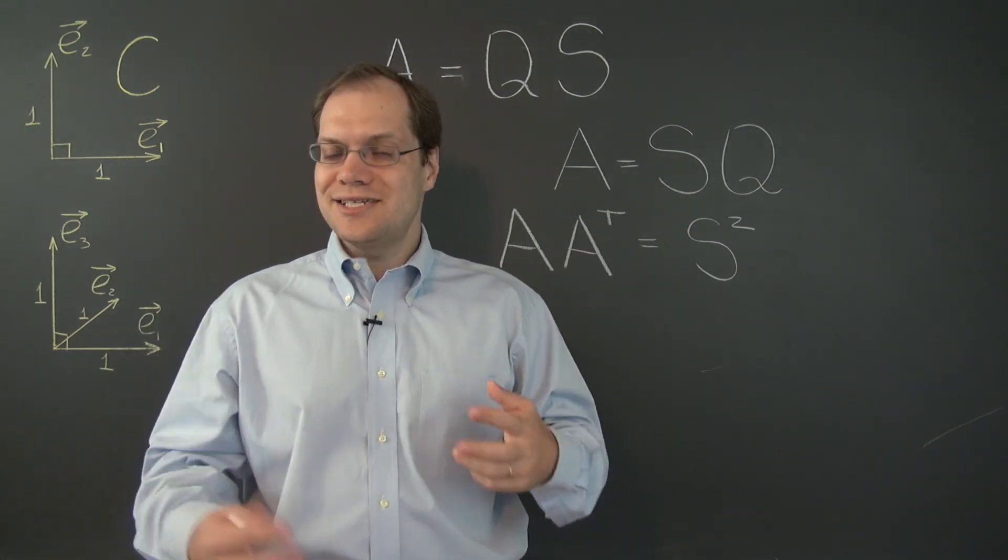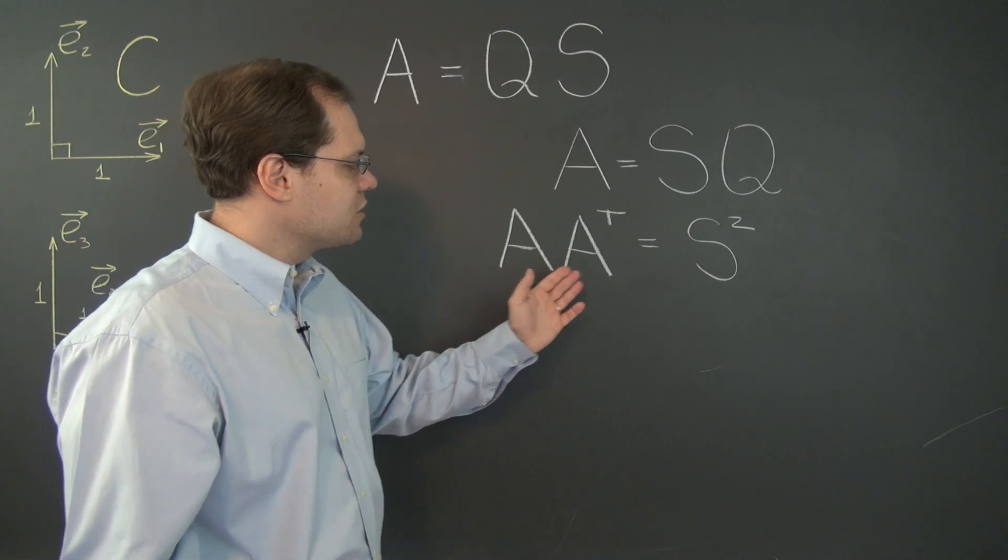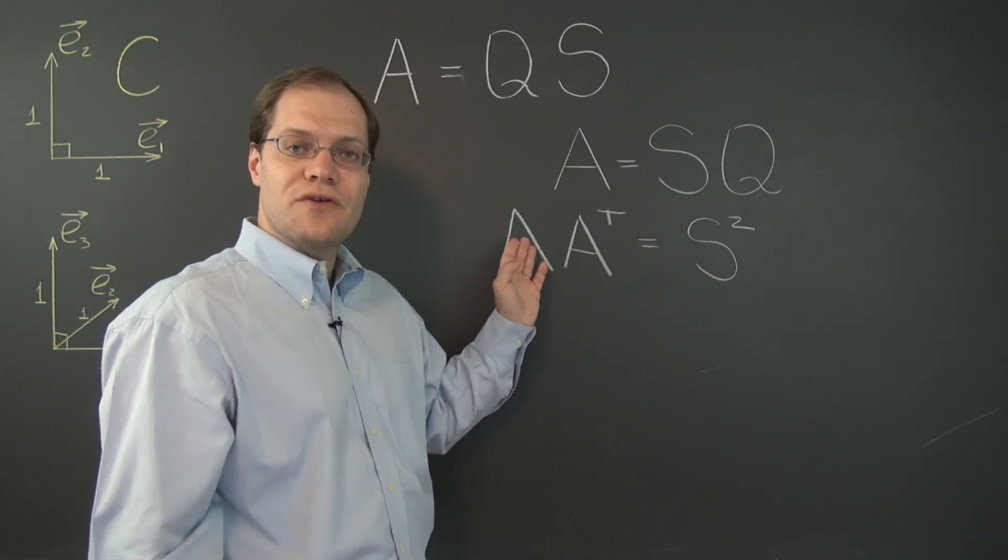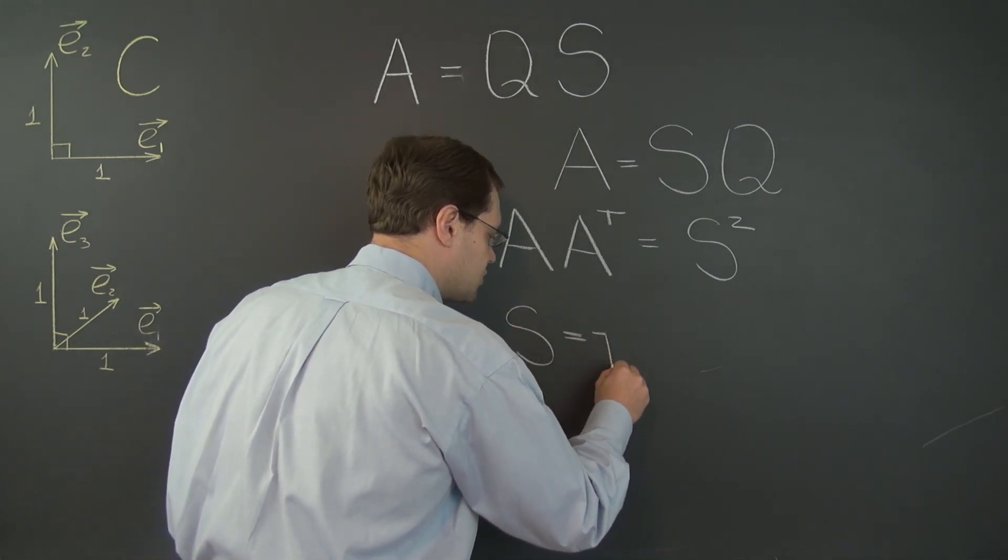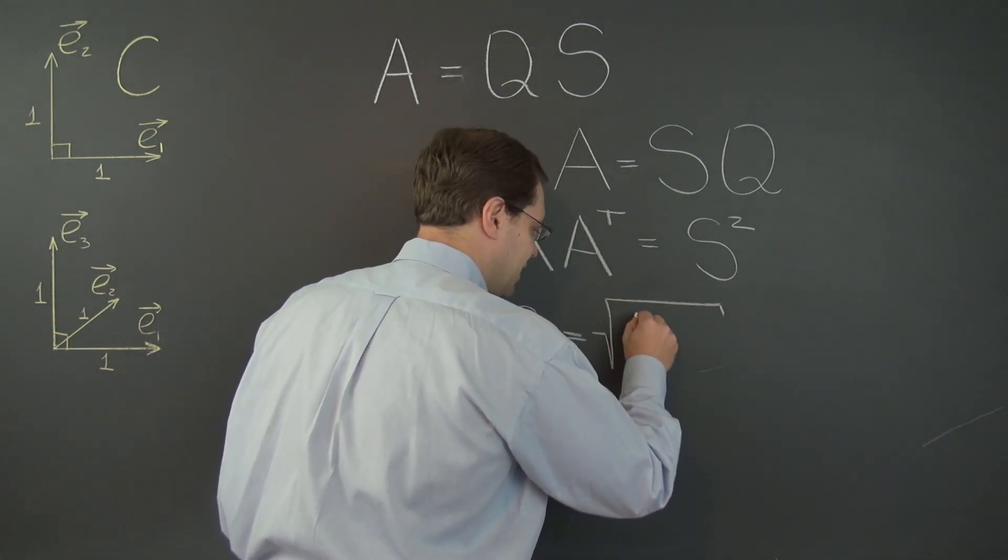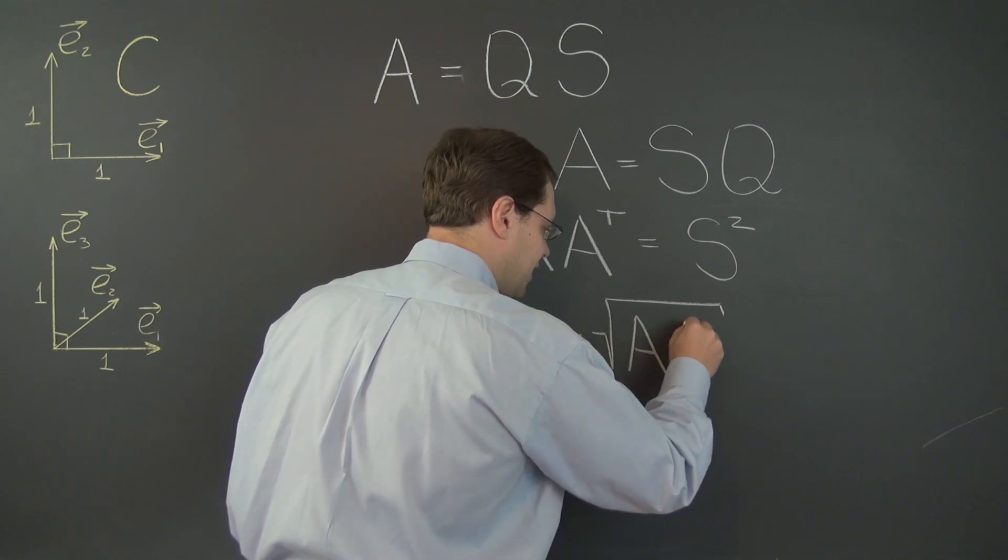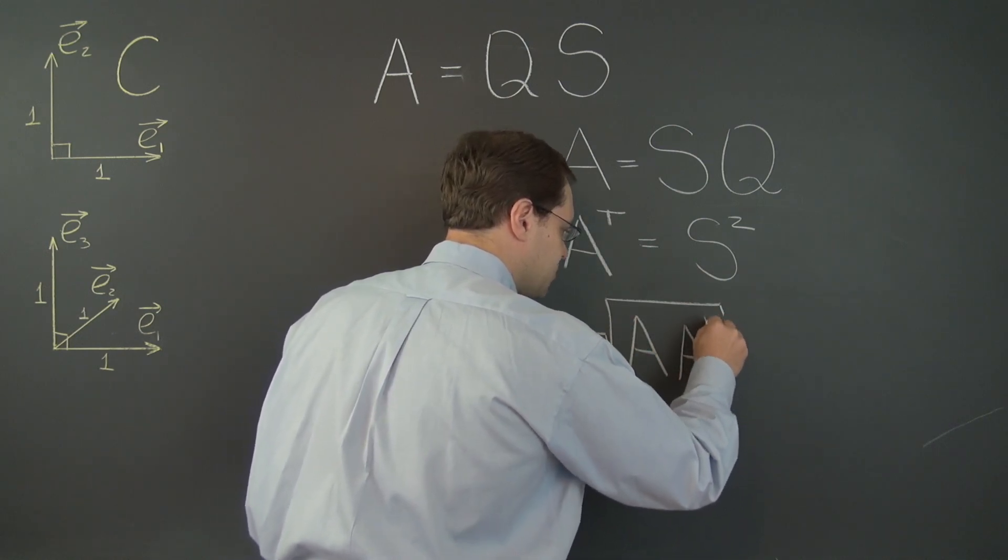So just as before when we concluded that S must be the square root of A transpose A, we're now concluding that S must be the square root of A A transpose.